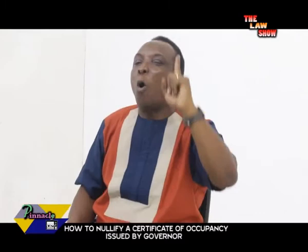Consequently, any exercise of this power of revocation for purposes outside those enumerated by Section 28 of the Act, or not carried out in compliance with the provisions of that section, can be regarded as being against the policy and intention of the Land Use Act, resulting in the exercise of the power being declared invalid, null, and void by a competent court in exercise of its jurisdiction on a complaint by an aggrieved party. This is how to nullify a certificate of occupancy — very simple in law.